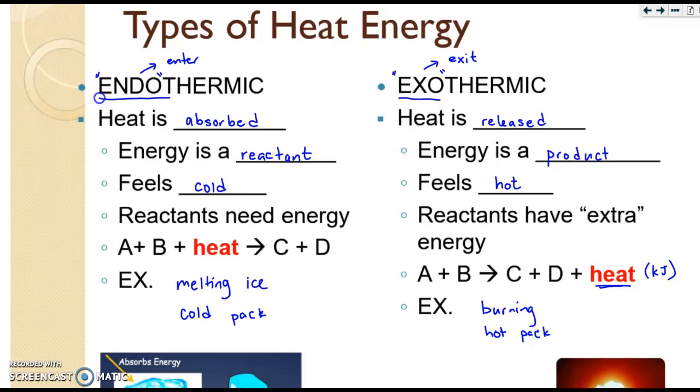Endothermic reactions, we usually represent this with a delta H, which actually stands for enthalpy. We'll talk about that in a little bit. But endothermic reactions have a positive delta H because we're adding heat to the reaction. And our exothermic reactions have a negative delta H. That negative indicates that the heat is leaving the reaction. That will be important later on.